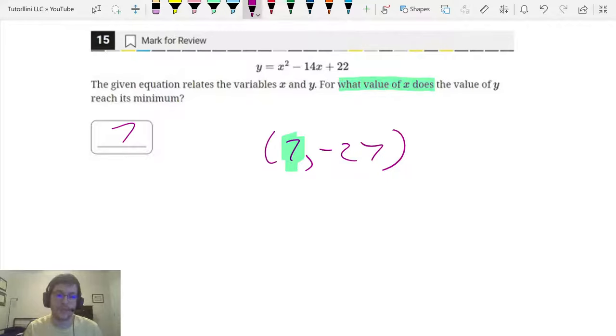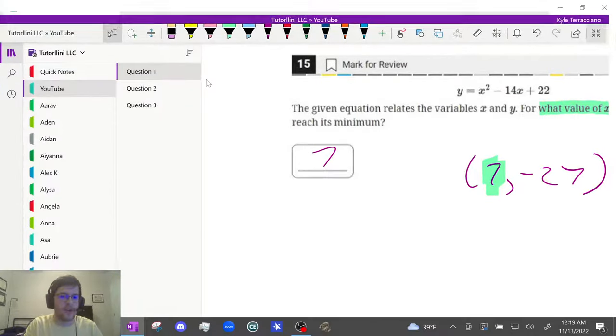So if this question said, what is the minimum of y or what is the minimum of f of x, it wants the y value, that's the default. But if it specifies what value of x, it wants the x value. So let's try a couple more.